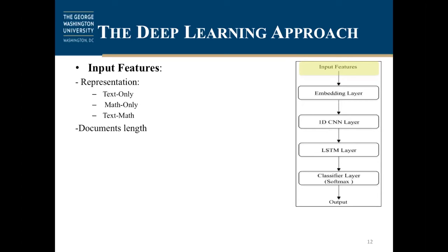Before feeding the embedding layer, we also experimented with different input lengths as a parameter. We tried reading the first 1,000 tokens from each document, then increased that to the first 1,500 tokens, and then to the first 2,000 tokens. We will present all results for these experiments. For the embedding layer, we also tried different embedding dimensions: 100, 200, and 300 dimensions, to determine which performs best.